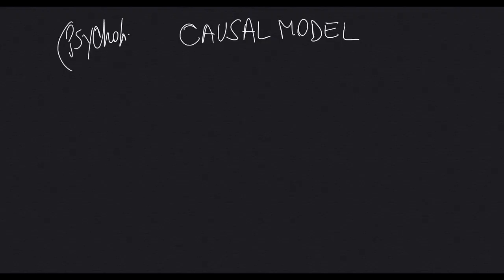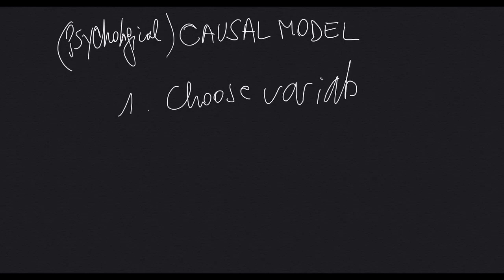In order to develop a psychological causal model, you need to follow the following steps. First step is to choose the variables. You need to have a causal variable and a consequence variable.